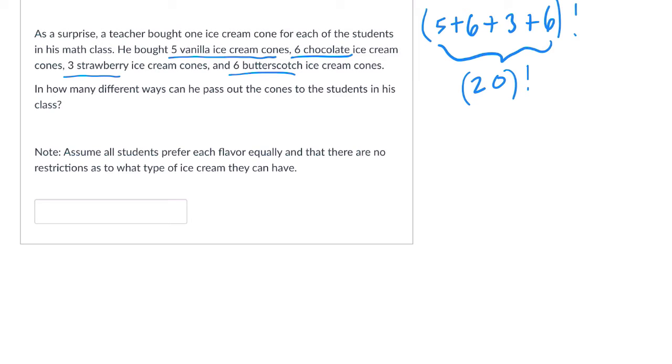You can scale it up to this case and say, well, you've got 20 factorial ways to arrange all the things. And then five factorial of them will be identical. That's the vanilla. Another six factorial for chocolate. Another three factorial for strawberry. And another six factorial for butterscotch. And this will get us our answer.